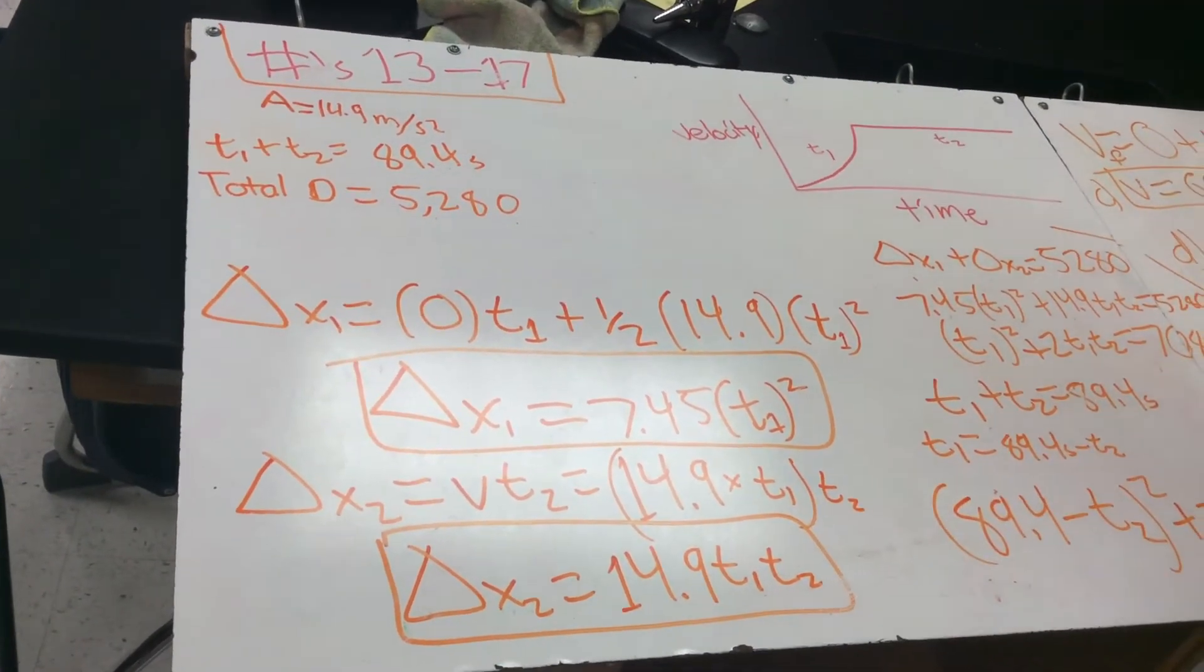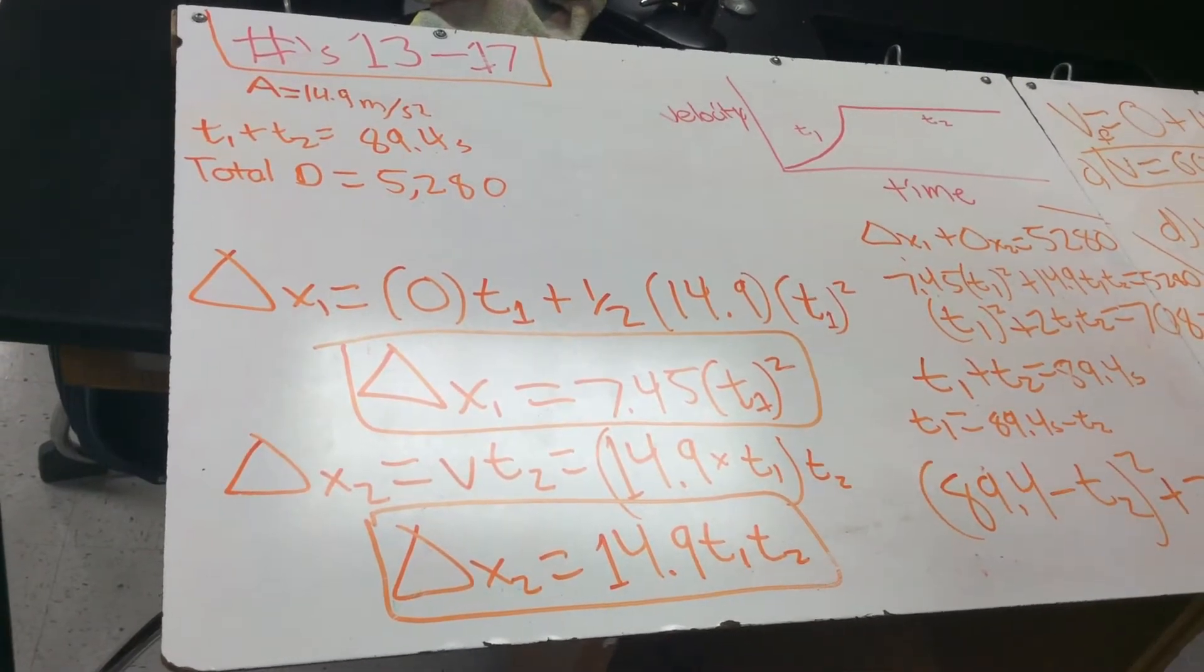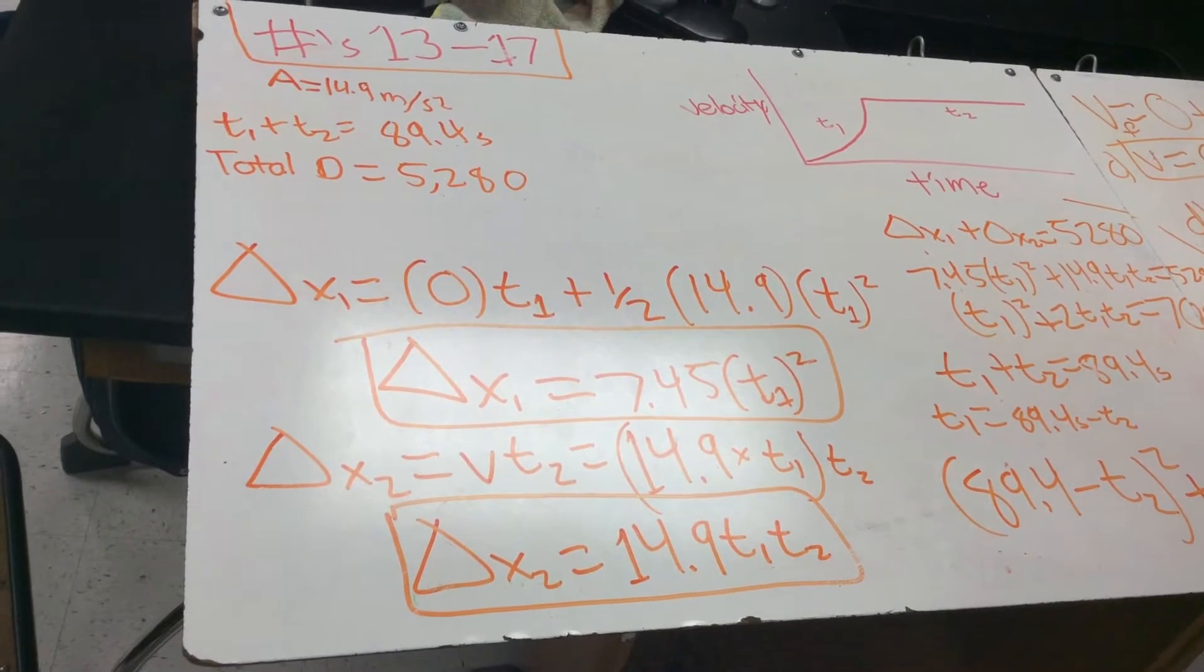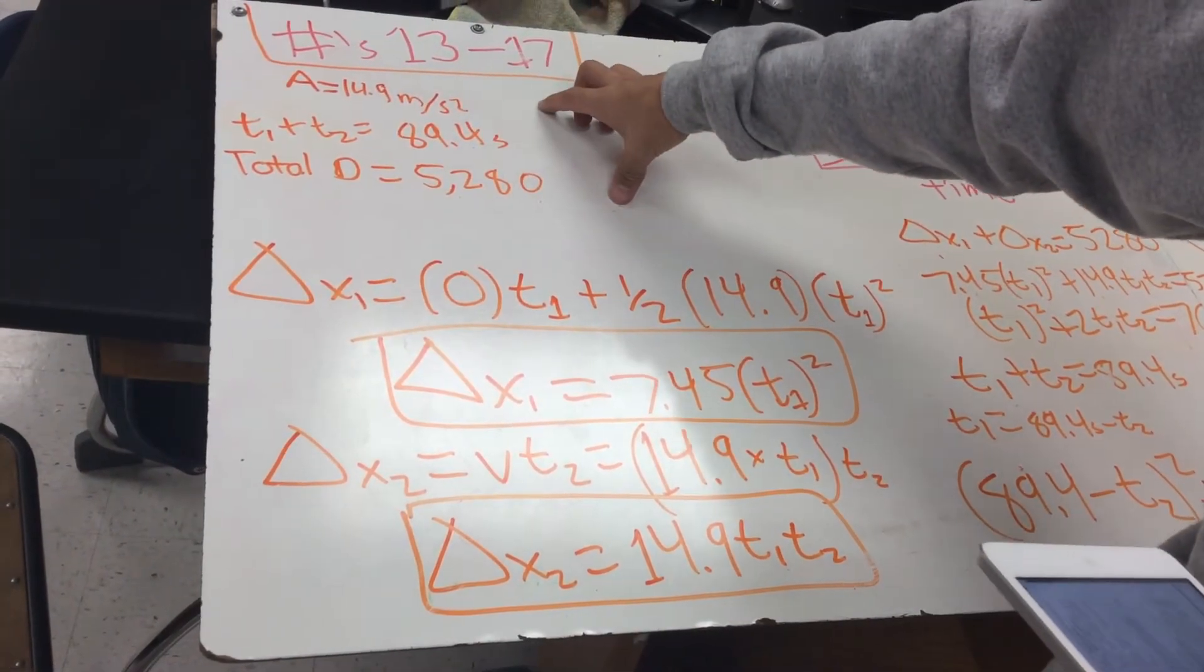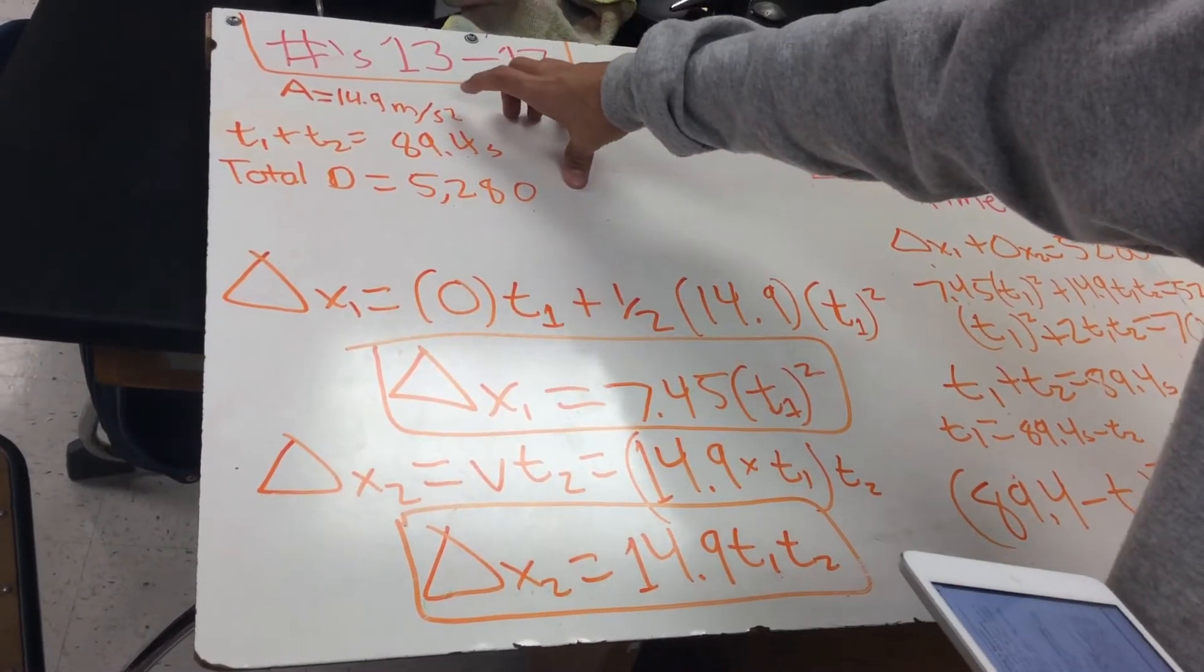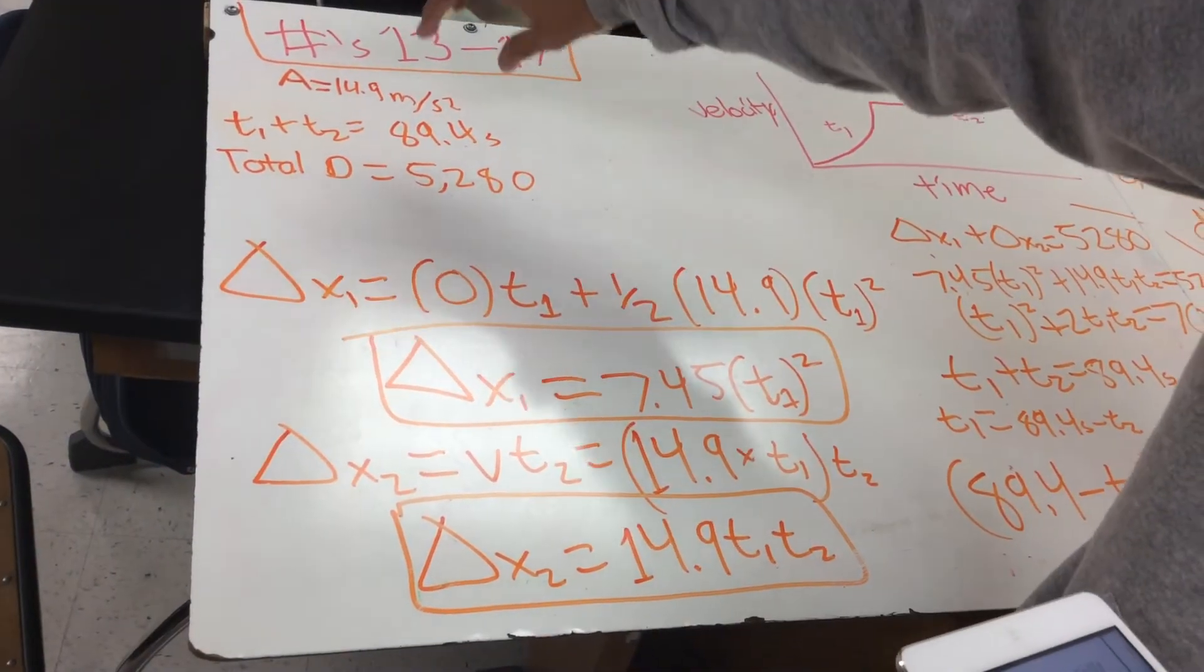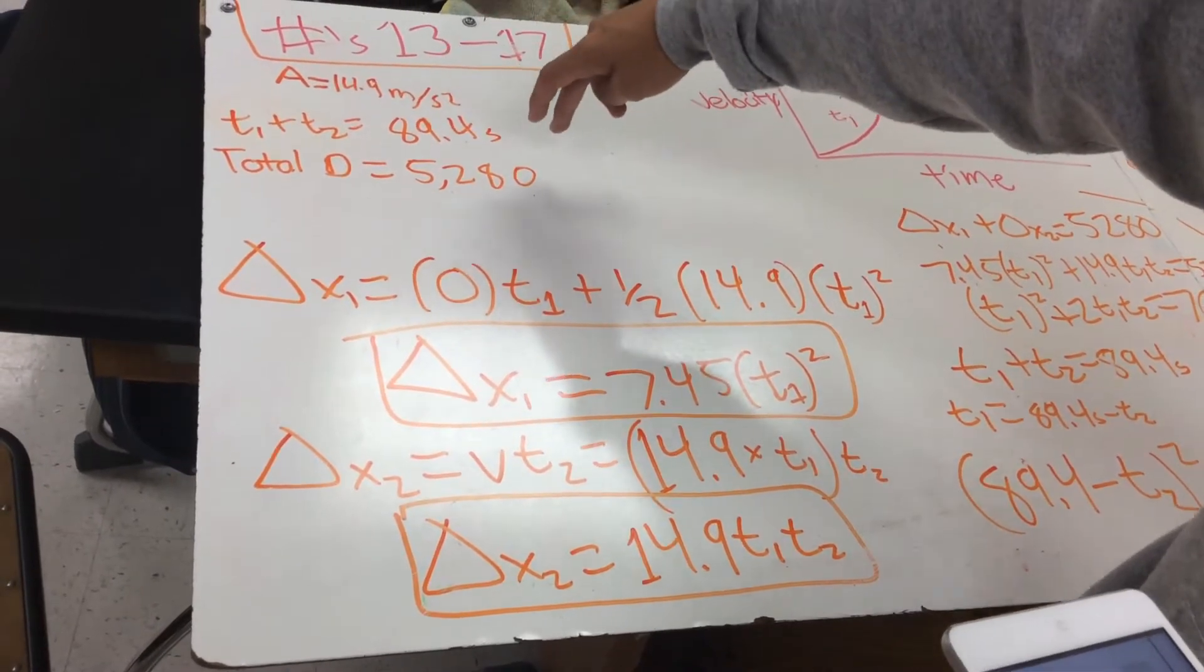Okay, so we did part 13 through 17 on question number 4. It's the one asking about an ice sled on a lake powered by a rocket engine. And your givens are here. The acceleration for the one that everyone has is 14.9 meters per second squared. The total time is 89.4 seconds, and the total distance is 5,280 meters.